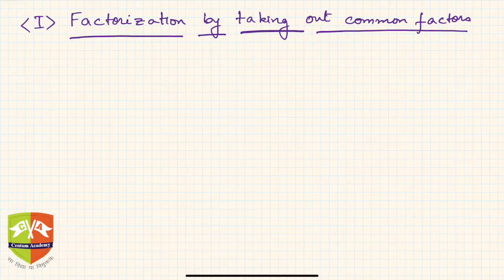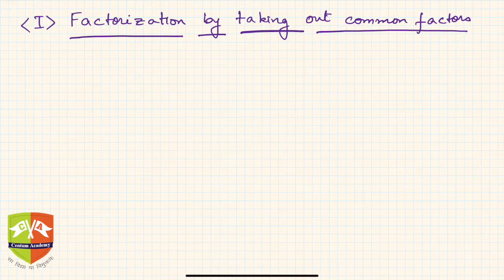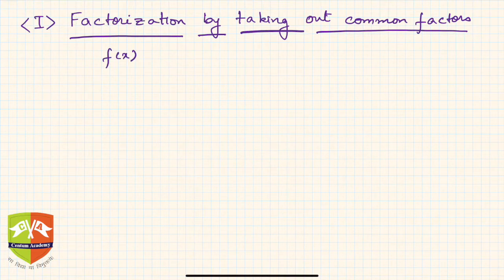Welcome to another session on factorization of polynomials. We are going to start with the first method, called 'low hanging fruit.' In any given polynomial f(x), first we need to see whether there are some common factors, separate them out, and then automatically the polynomial gets factorized.